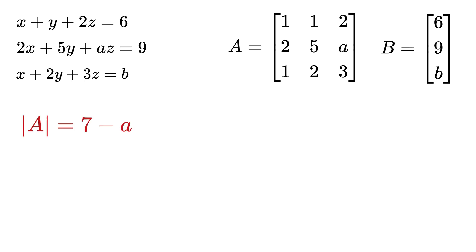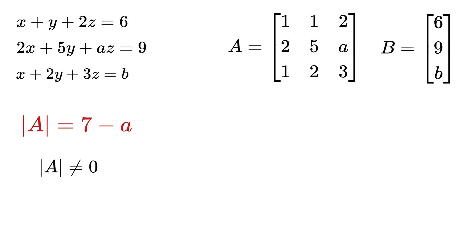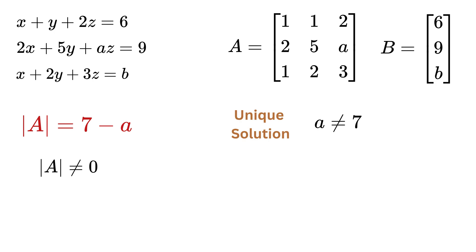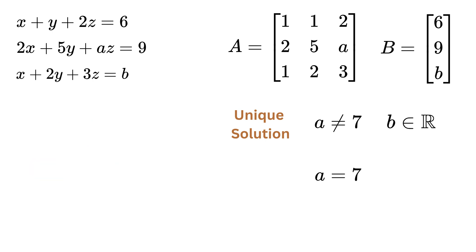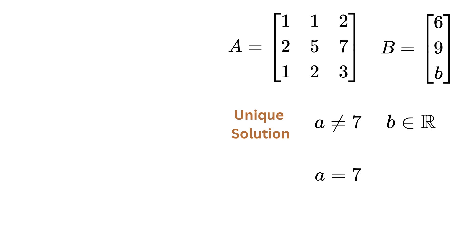This simplifies to 15 − 2a − 6 + a + 2·(−1), giving a determinant of 7 − a. If the determinant is not zero, the three coefficient rows are independent and the system has exactly one solution for all real values of b. Therefore, whenever a ≠ 7, the determinant is non-zero and the system has a unique solution regardless of b. Now we check the special case when a = 7, because then the determinant is zero and we must dig deeper.